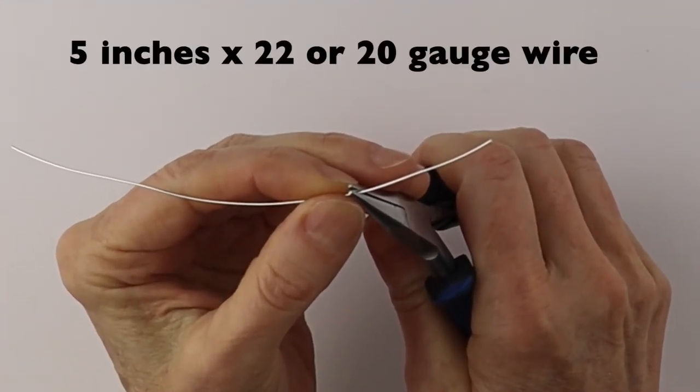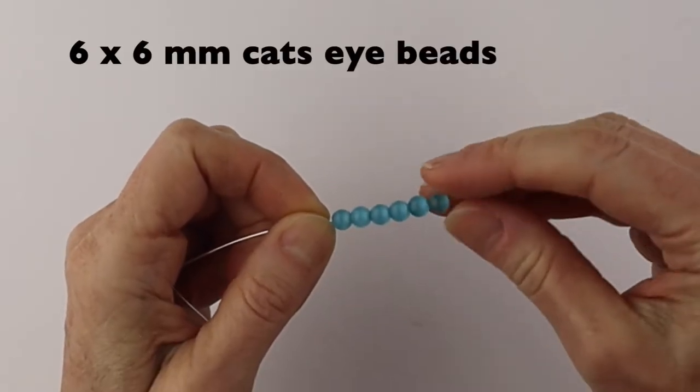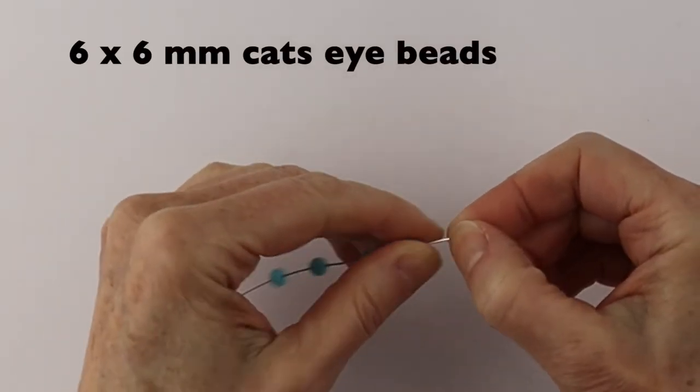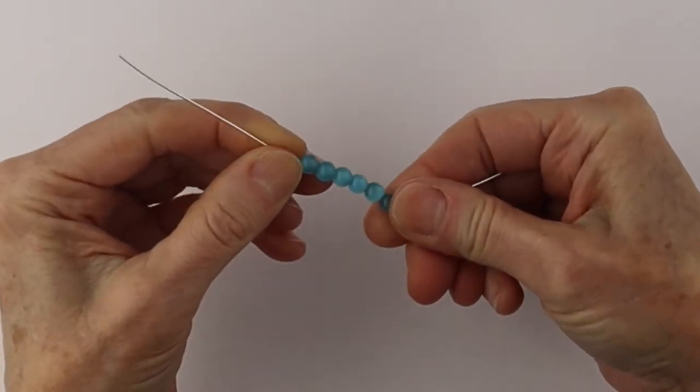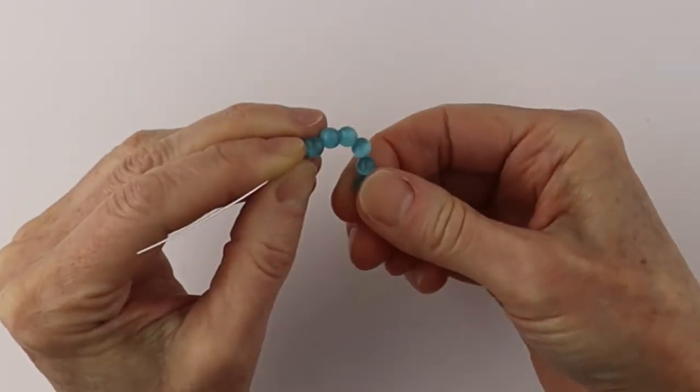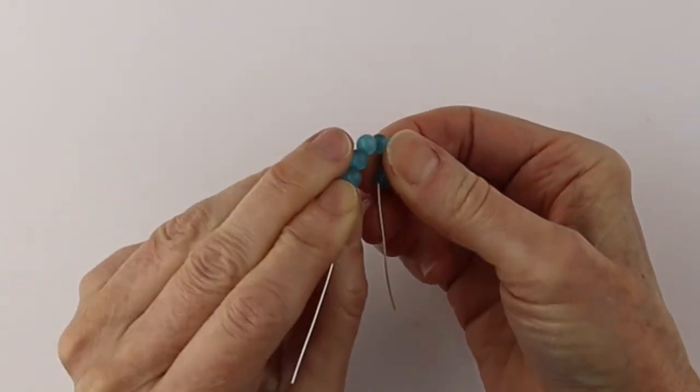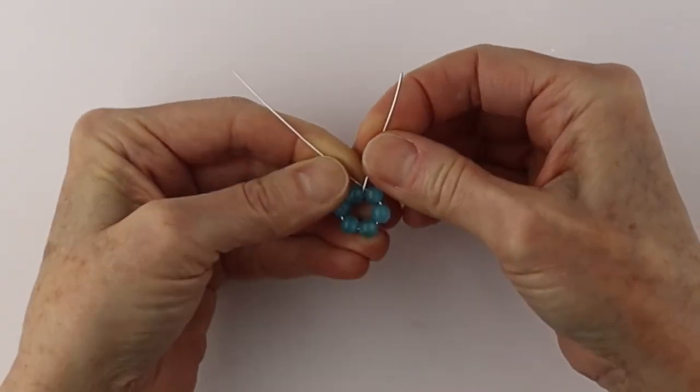We're going to start with a five inch piece of 22 or 20 gauge wire and put on six six millimeter beads. These are the cat's eye beads. I love these beads. I also love the miracle beads. You can use miracle beads if you prefer, or any round bead works well with this. You can even use faceted beads.